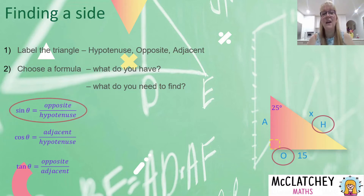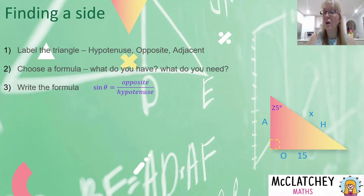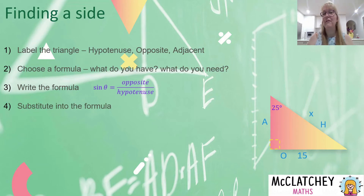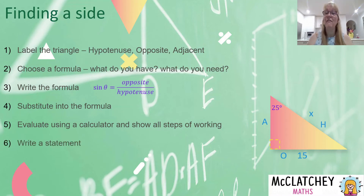Once we've chosen our formula, our next step is to write it down. It's always important to write the full formula — not just SOH CAH TOA — and then substitute the information given into the formula. As with any situation where we're using formulas, we follow through by evaluating and showing all our steps of working, work it out on the calculator, and finally write a statement.